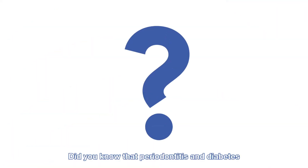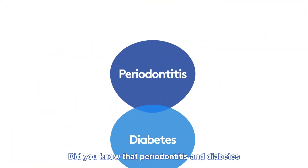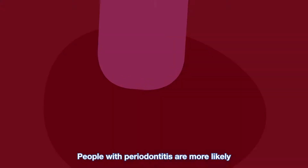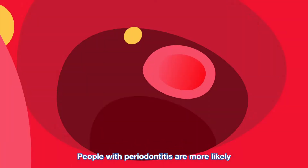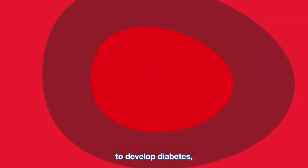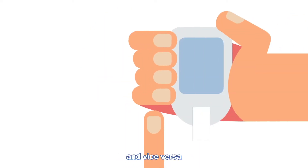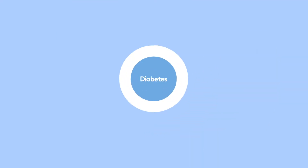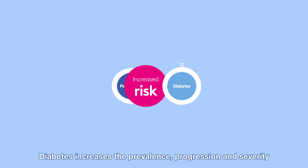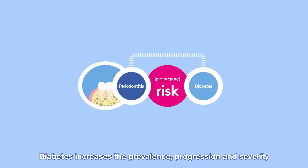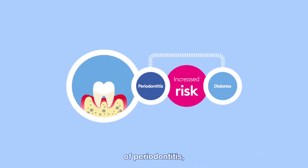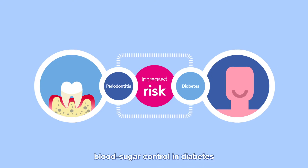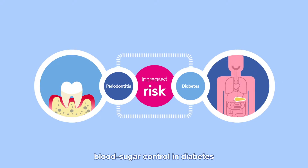Did you know that periodontitis and diabetes are closely linked? People with periodontitis are more likely to develop diabetes and vice versa. Diabetes increases the prevalence, progression and severity of periodontitis, and periodontitis influences blood sugar control in diabetes.